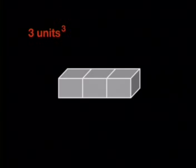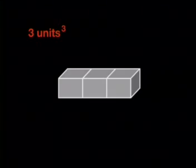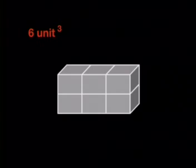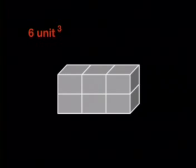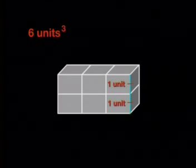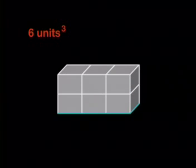What would the volume be if I doubled it? The amount of space taken up by the structure must just be doubled, so double the volume is 6 cubic units. In this doubling, I have doubled one side's length, but these other sides have stayed the same.